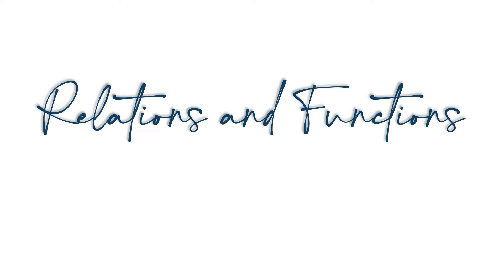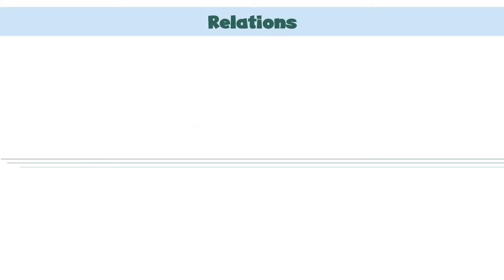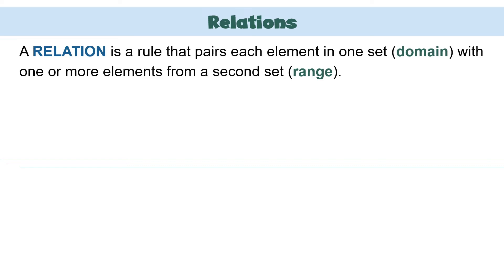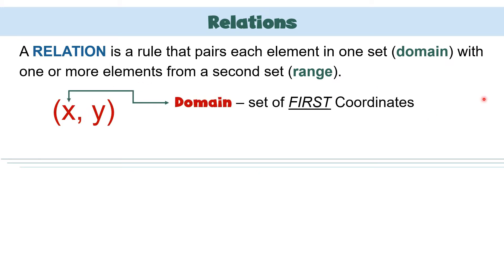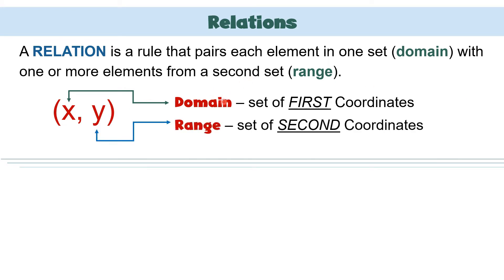Relations and Functions. Let us start with the definition of relation. A relation is a rule that pairs each element in one set, which we call domain, with one or more elements from a second set, which we call range. It can be presented using an ordered pair, where x values are part of the domain and y values are part of the range. Domain is the set of first coordinates or the x values, while range is the set of second coordinates or the y values.